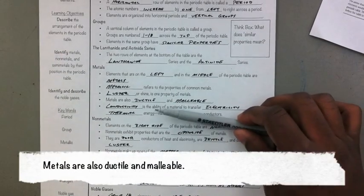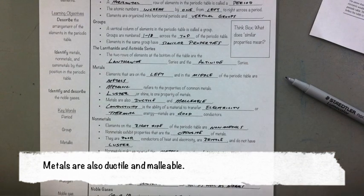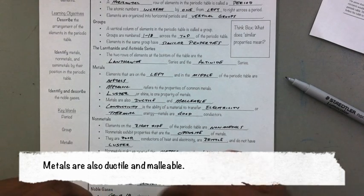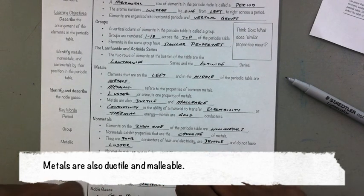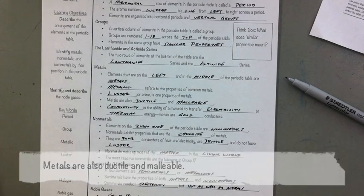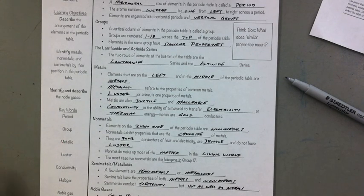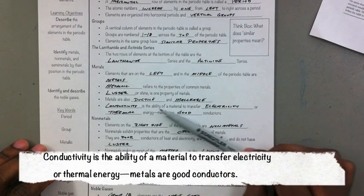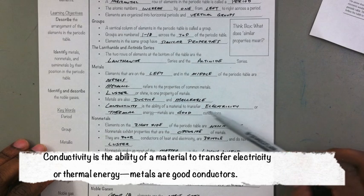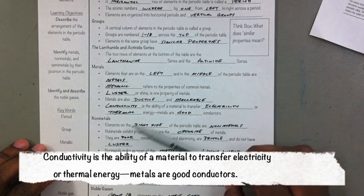Metals are also ductile, which means they're easily stretched into wires, much like the wires that go in our earphones when we're listening to music. That's generally copper wire. It is ductile, so it can be easily stretched into wires. Metals are also malleable, which means they're easily shaped or bent, which is why we can make jewelry, tools, and many other things out of metal by shaping them.